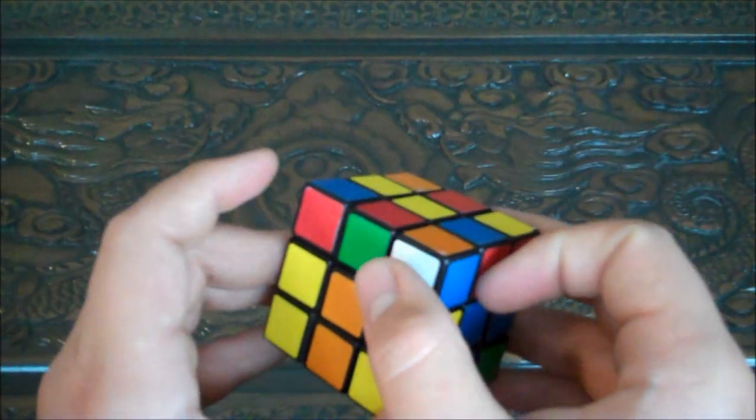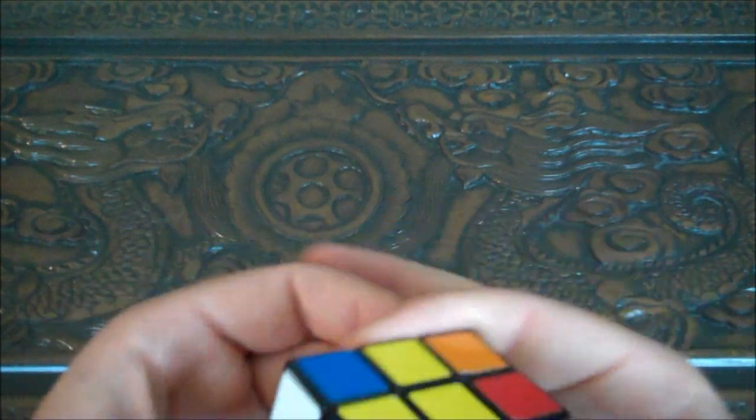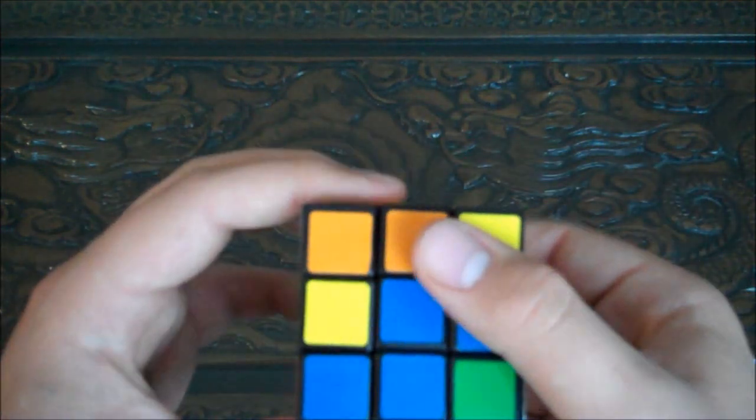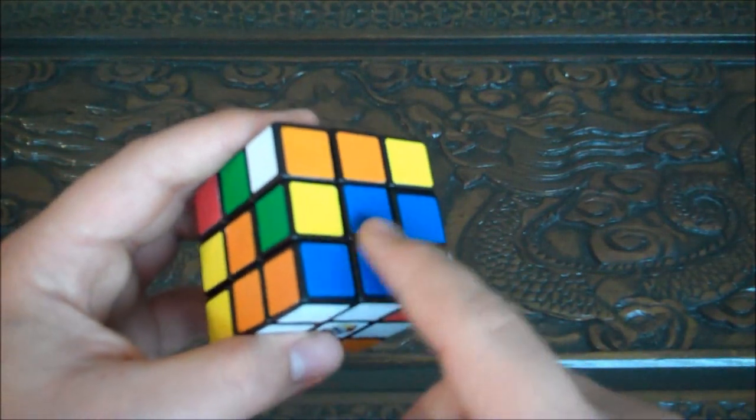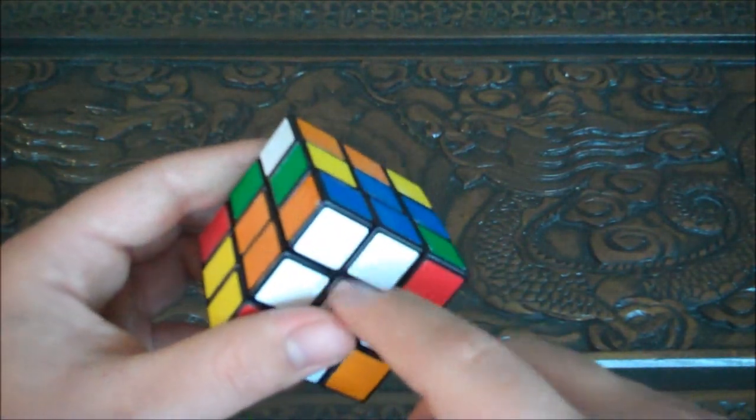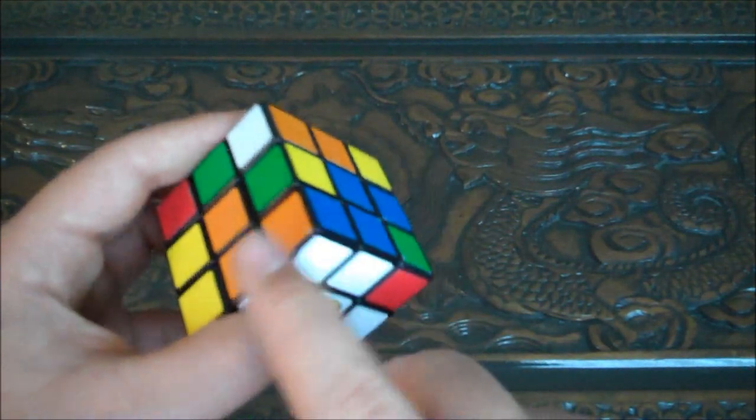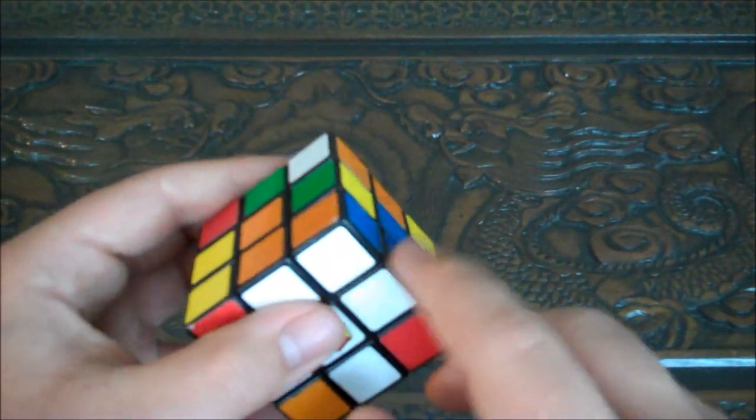You're going to go left, up, top counterclockwise, left down. Now, this piece is set. It's matching the blue side, and it's matching the orange side, and the white side. So this guy's good to go, and these two guys are good to go because they're matching both their colors. So you're going to do that again.